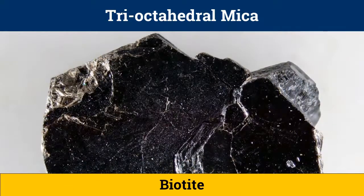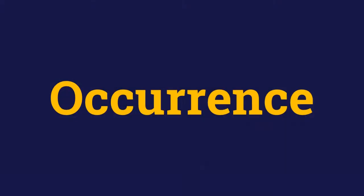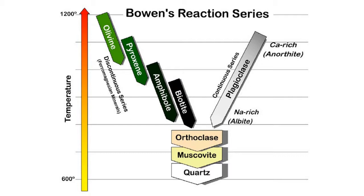Biotite is another trioctahedral mica which has no economic use but is of interest to mineral collectors. It is isostructured with muscovite, meaning the positions of cations and SiO4 tetrahedra in both minerals are similar. Muscovite mica is part of the Bowen's reaction series and occurs as an original constituent of acid igneous rocks such as granite and pegmatites.